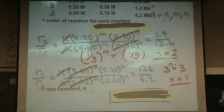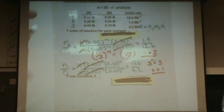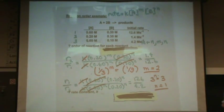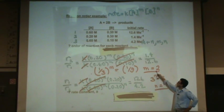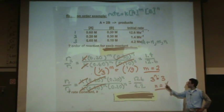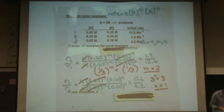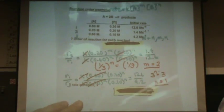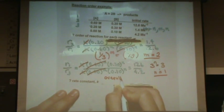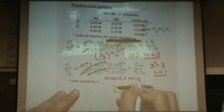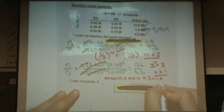So the order of reaction with respect to A is two, with respect to B is one, and if you want the overall order, you just say overall equals m plus n, or two plus one is three.